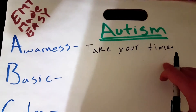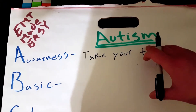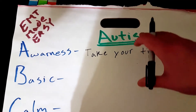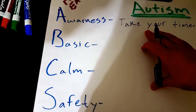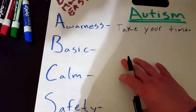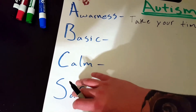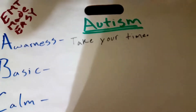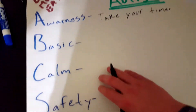Today I am going over autism. In this video I'm not really going to cover exactly what autism is — I'll get deeper into that in a different video. For this one I'm only going to cover your approach to an autistic patient. For your approach you want to remember this acronym: ABCS, which stands for Awareness, Basic, Calm, and Safety.